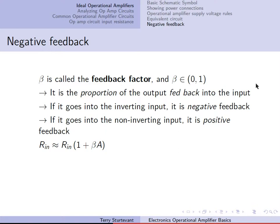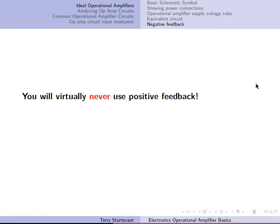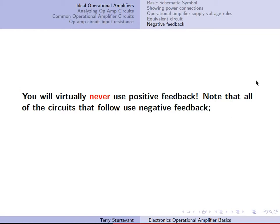The input resistance when there is feedback is the input resistance times 1 plus beta times A, where A is the voltage gain. The output resistance with feedback is the original output resistance divided by 1 plus beta times A. The gain is 1 over beta — in other words, the output depends only on the feedback, not on the op-amp characteristics. You will virtually never use positive feedback in an op-amp circuit. All the circuits that follow use negative feedback, meaning the feedback goes into the inverting input.